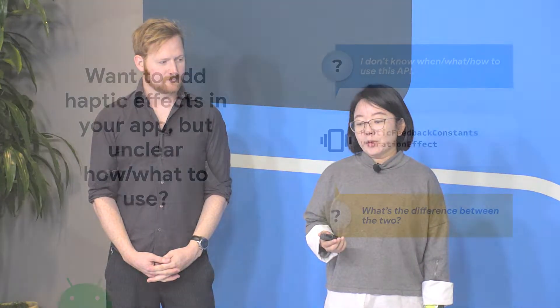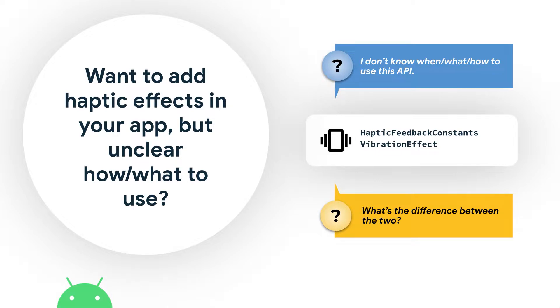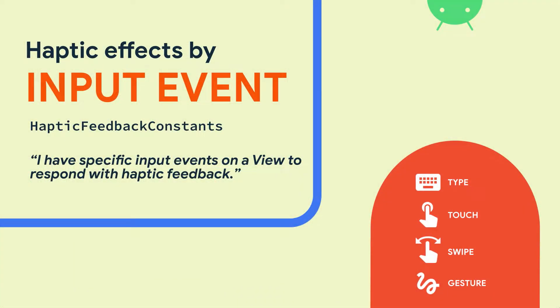So you want to add haptic effects for your app, and you found these two constants: HapticFeedbackConstants and VibrationEffect. But you may still have questions like, what's the difference between these two, or what should I use for my app? We are here to answer your question. If you're working on a very specific UI element with a specific input event, such as a keyboard for typing or a button for clicking, then HapticFeedbackConstants is a good place to start.